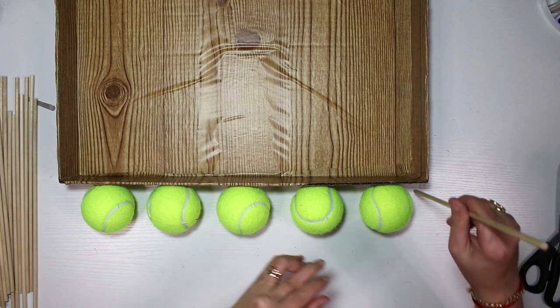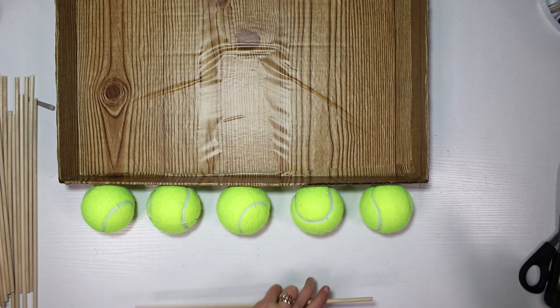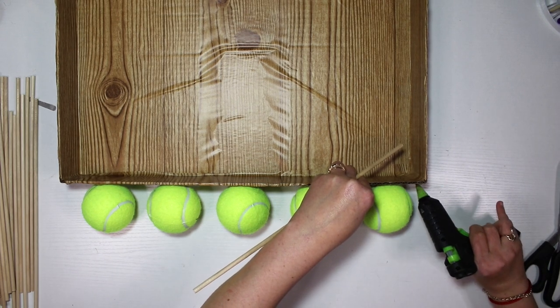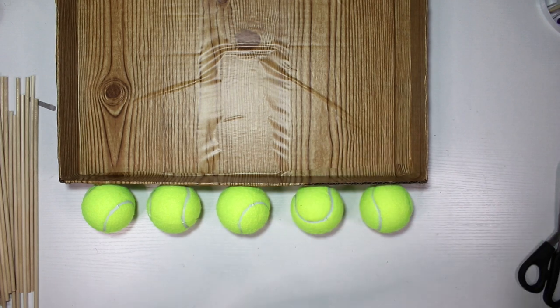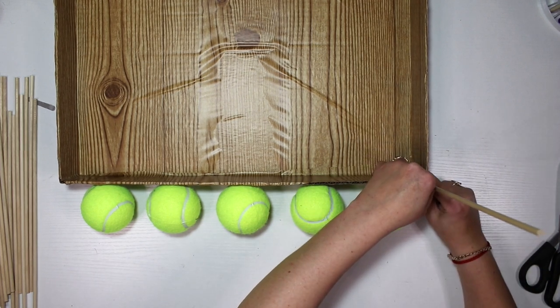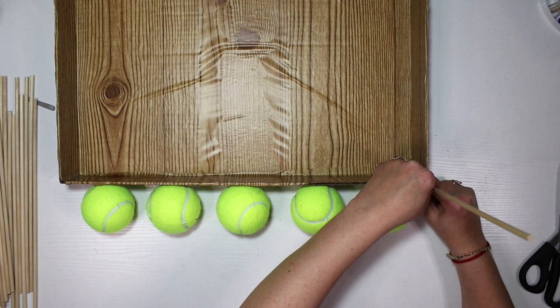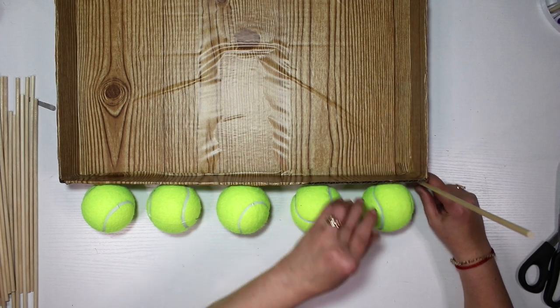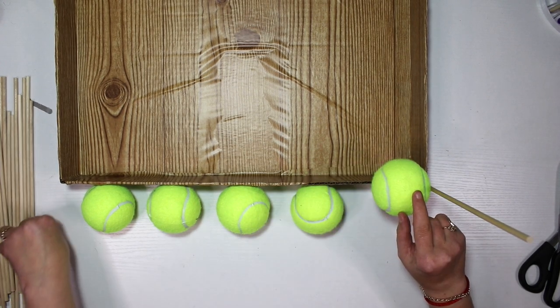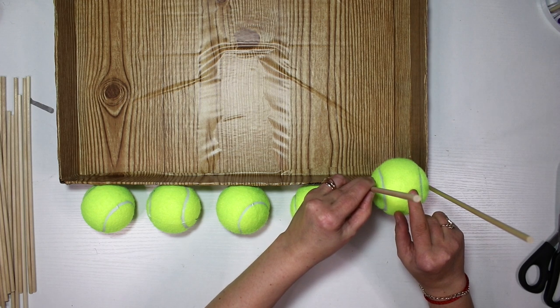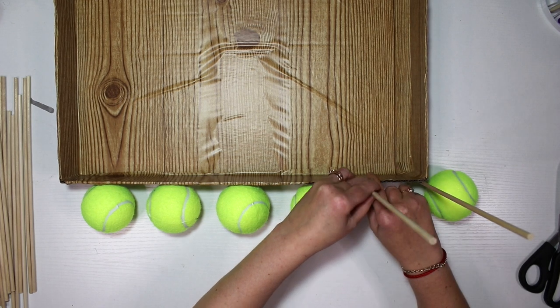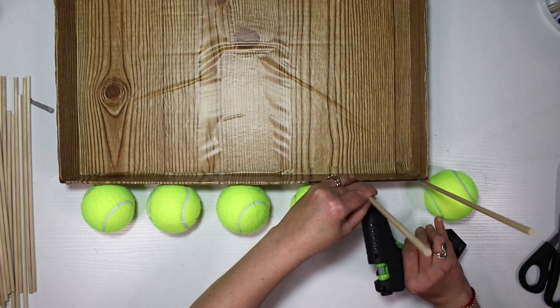For this step we're going to be using some wooden dowels from the Dollar Tree. You can use anything you have on hand. I use those because they're a little bit thicker than a regular one, and they are from the Crafter's Square section of Dollar Tree. So they are a little thicker than the regular barbecue sticks in the kitchen area.